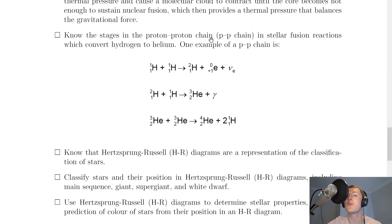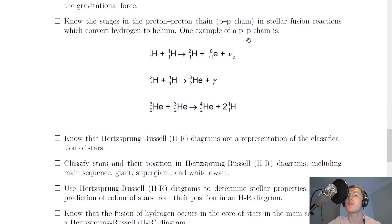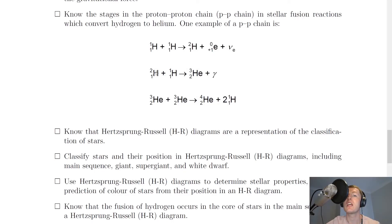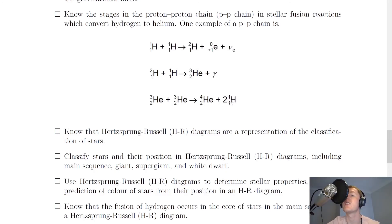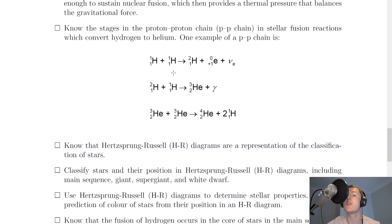You need to know the stages in the proton-proton chain (PP chain) in stellar fusion reactions that convert hydrogen to helium. Stage 1: hydrogen plus hydrogen produces deuterium (hydrogen-2), plus an electron, plus an electron neutrino. Stage 2: deuterium fuses with another hydrogen to form helium-3 plus a gamma ray. Stage 3: helium-3 fuses with another helium-3 to form helium-4 (an alpha particle) plus two individual hydrogen nuclei, which can then re-enter stage 1. This is how the Sun undergoes nuclear fusion to burn hydrogen and form helium.